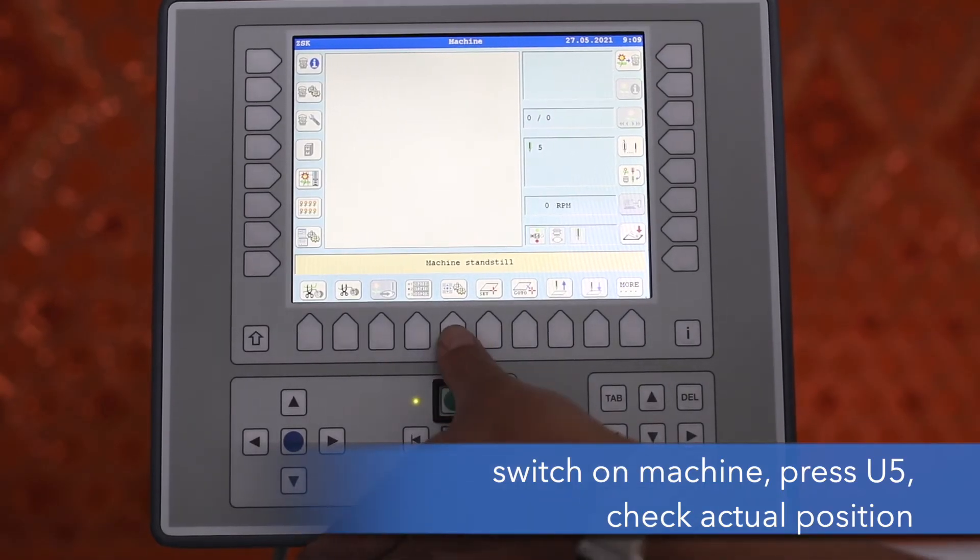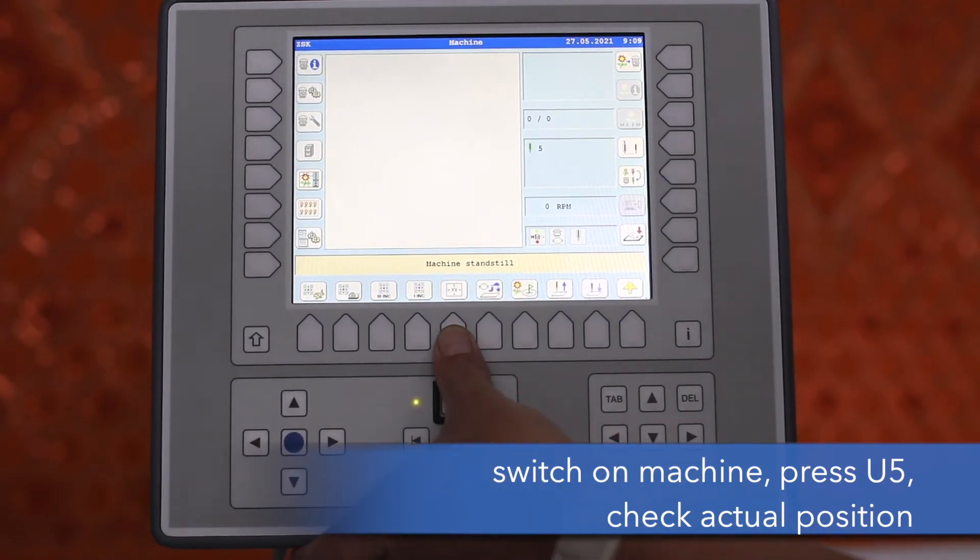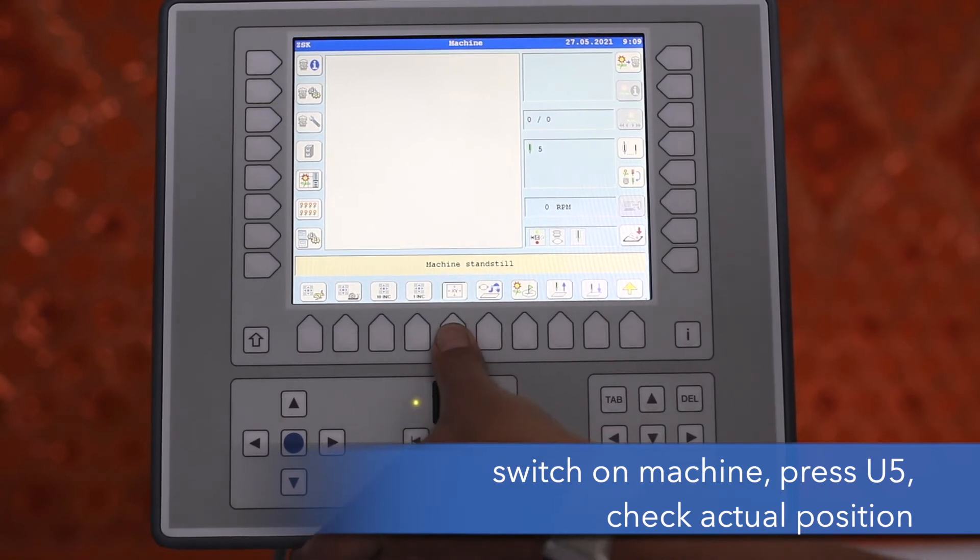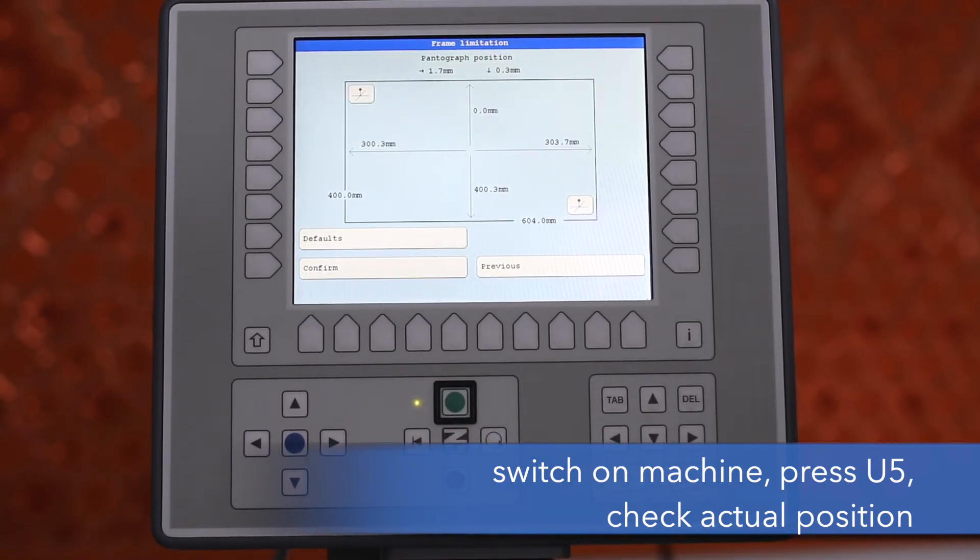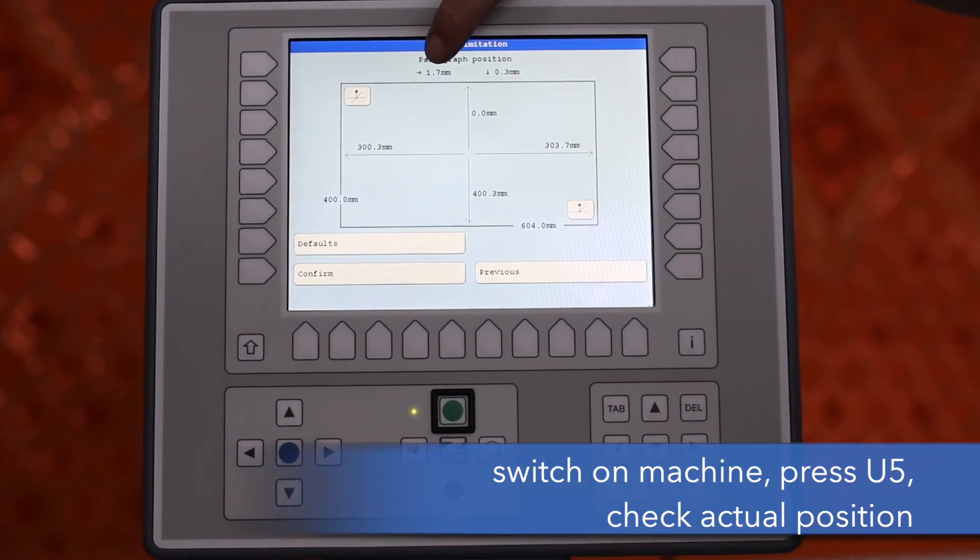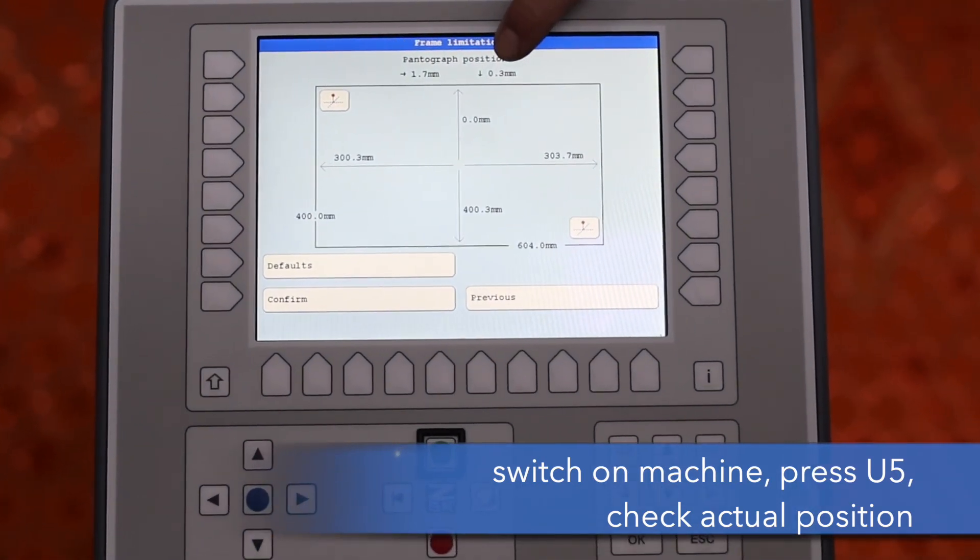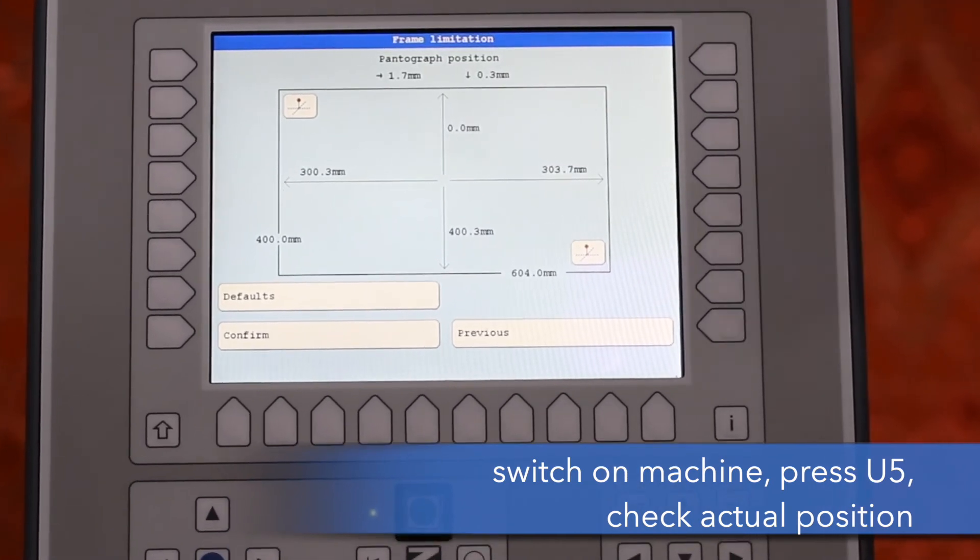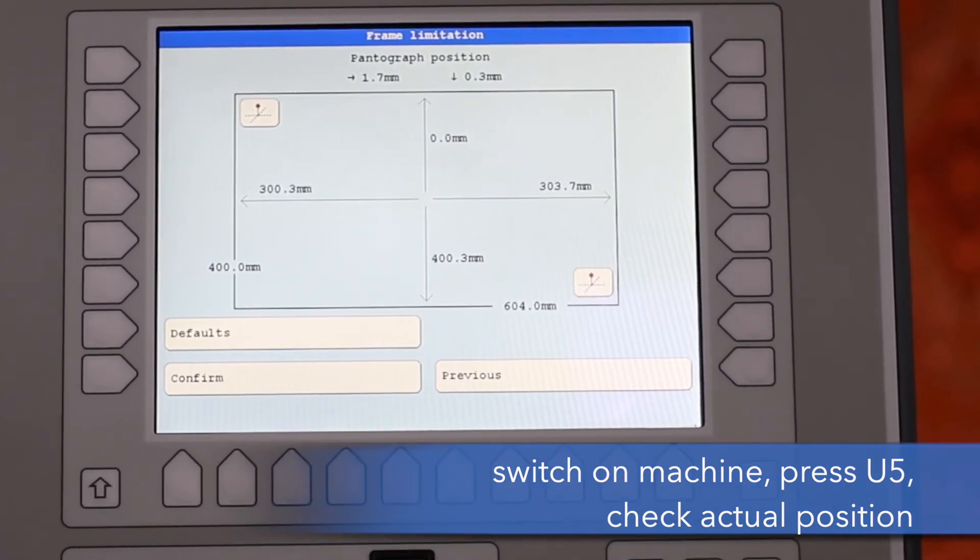Then we are going to frame limitation. Here we have the pantograph position. It is off for 1.7 left and right and 0.3 in the front. That means we have to reset the encoders.